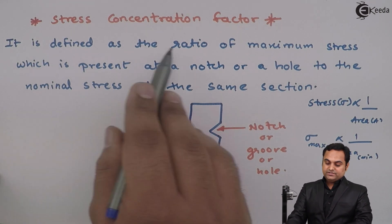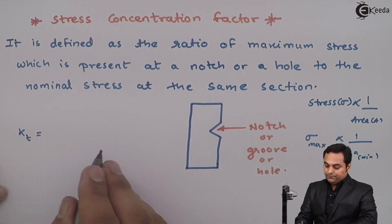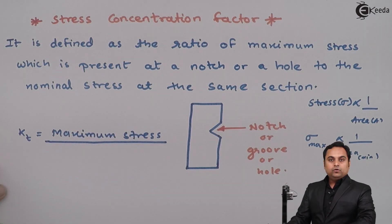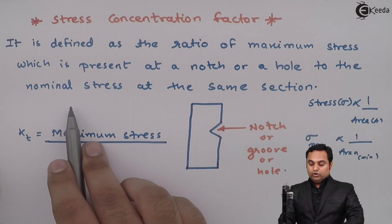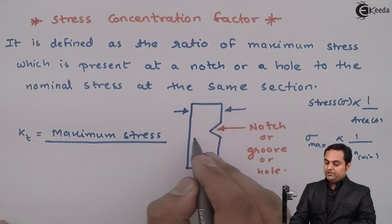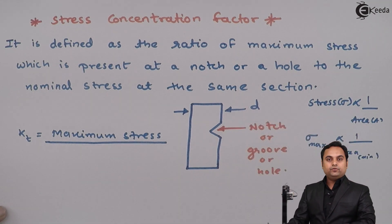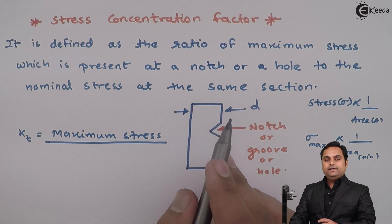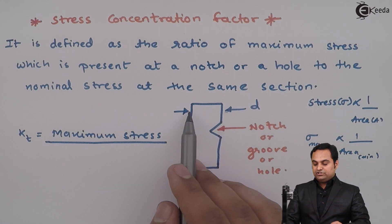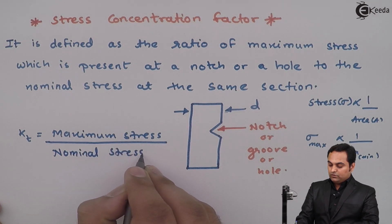Stress concentration factor is denoted by K_t, and it equals maximum stress at the notch divided by nominal stress at the same section. Nominal section means the original section — for example, if the member has a diameter d, its original area will be (π/4)d², which becomes the nominal area. The stress at that section is called nominal stress, and its value will be less because the area is more.